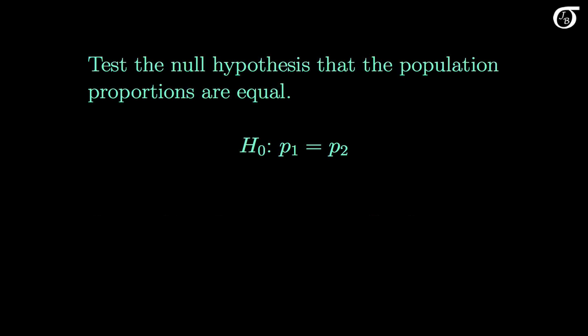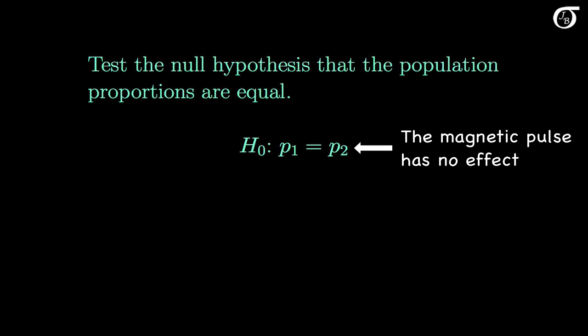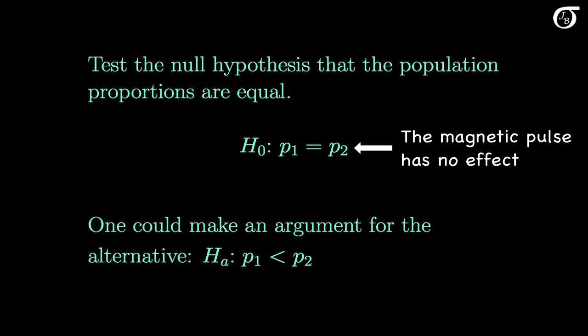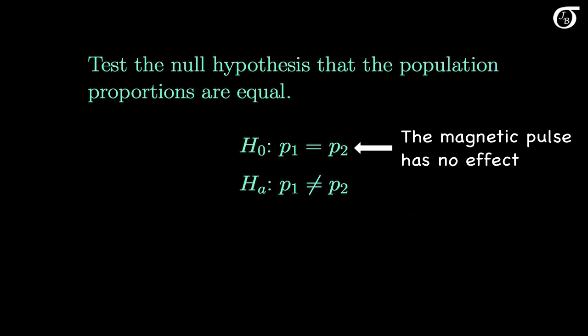Let's test the null hypothesis that the population proportions are equal. This null hypothesis would mean that the magnetic pulse does not have an effect on the theoretical proportion of pigeons that would return to the home loft. Because of the nature of the problem, one could make a pretty strong argument for the one-sided alternative hypothesis that P1 is less than P2. But I would suggest the researchers would be interested in a difference in either direction, so I would err on the side of caution and choose the two-sided alternative, though opinions may differ on this matter.